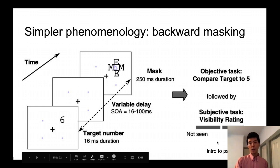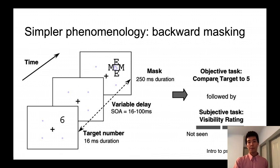And then their paper after presenting this stimulus asked people to compare whether the target was above or below five. So in this case, six, it's above five. And then that's the so-called objective task experiment.